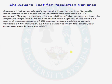We can use a chi-squared test to test a claim about a population variance. Consider the following problem.